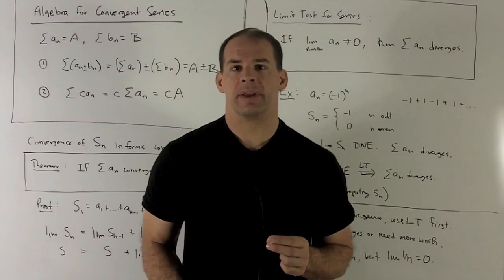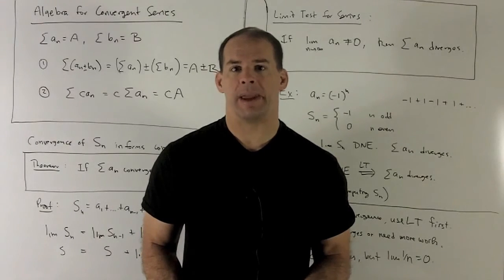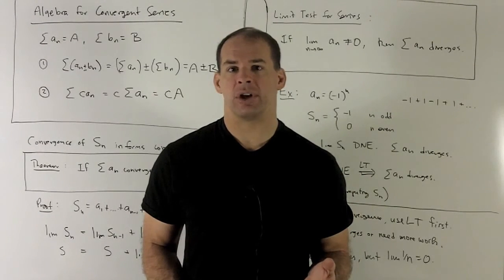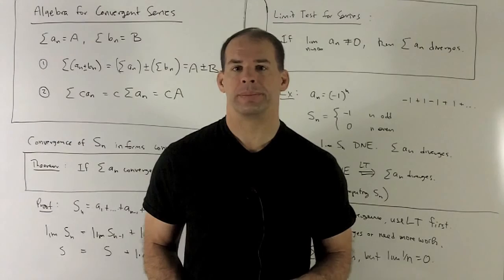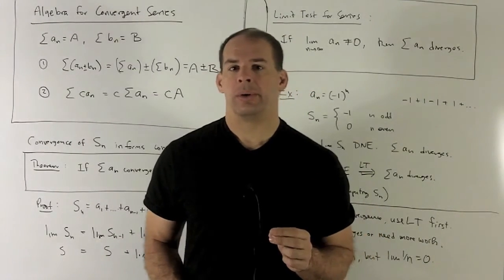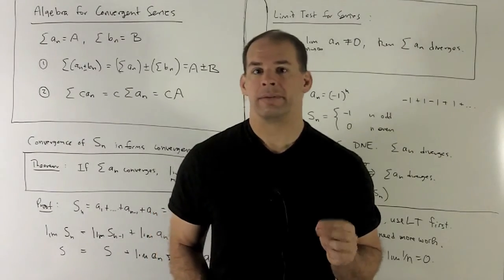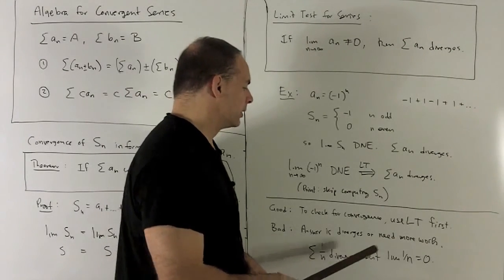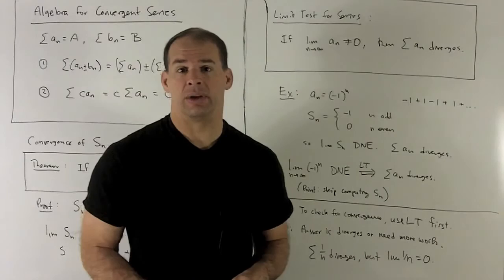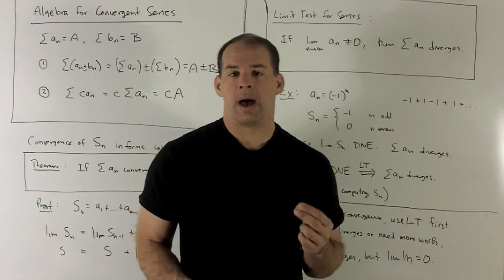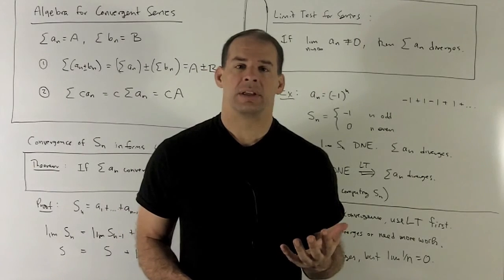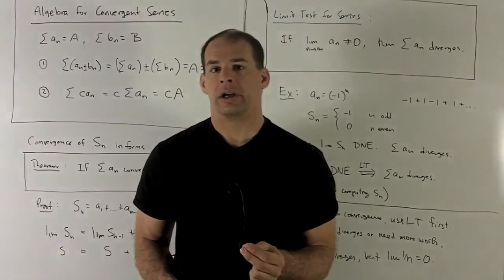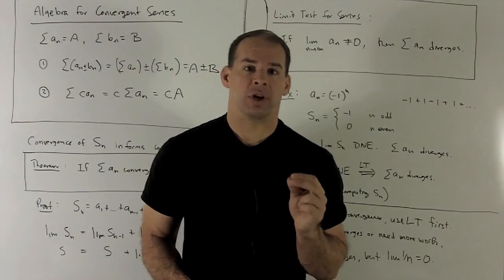So what does the limit test get us? If somebody hands you a series, check the limit of a sub n. If it goes to a non-zero number or if it diverges, then your series automatically diverges — walk away, your work's done. On the other hand, if the limit goes to zero, the series might diverge anyway. For instance, we're going to see that the series associated to one over n diverges, but the limit of one over n as n goes to infinity goes to zero. So the limit test will either tell you your series diverges, or you need to do more work — it'll never tell you for sure that you have a convergent series.